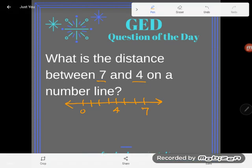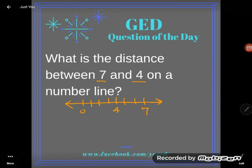So how far apart are four and seven on a number line? Well, you could just put them down on a number line and count. One, two, three away.